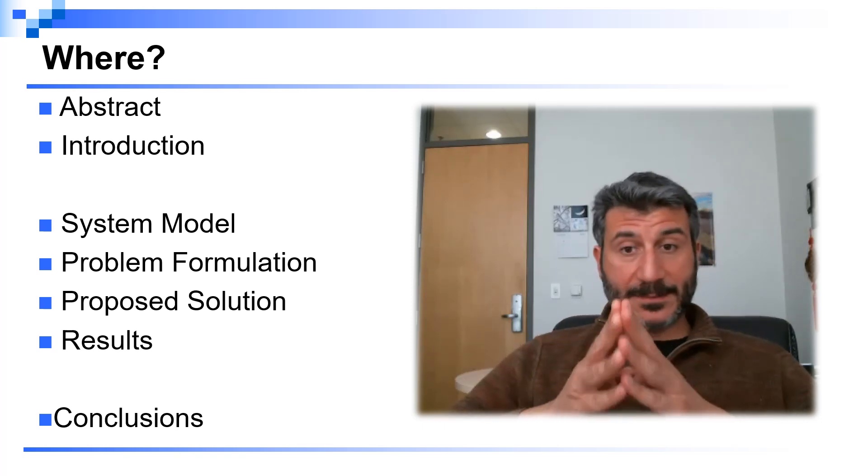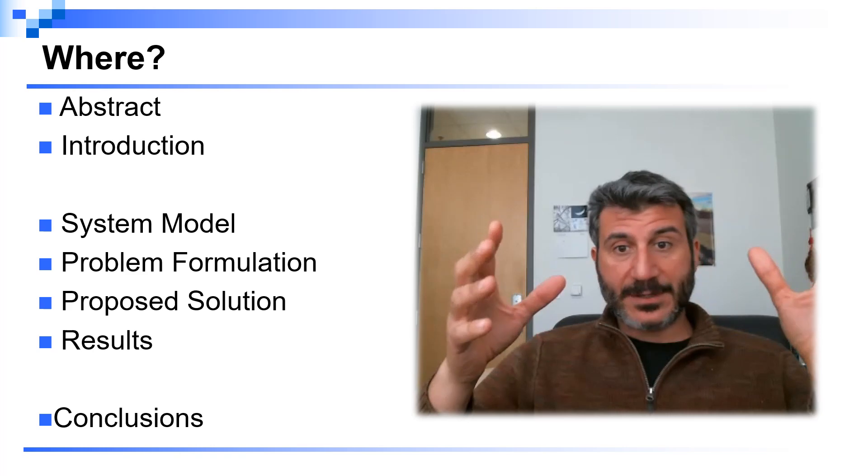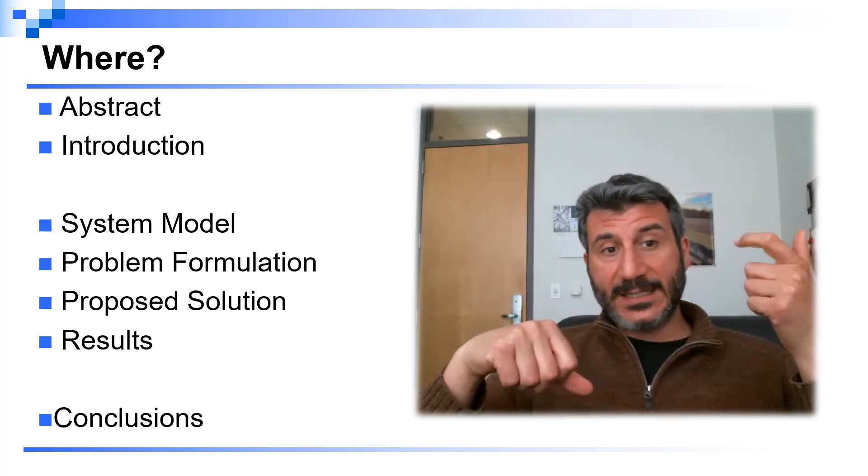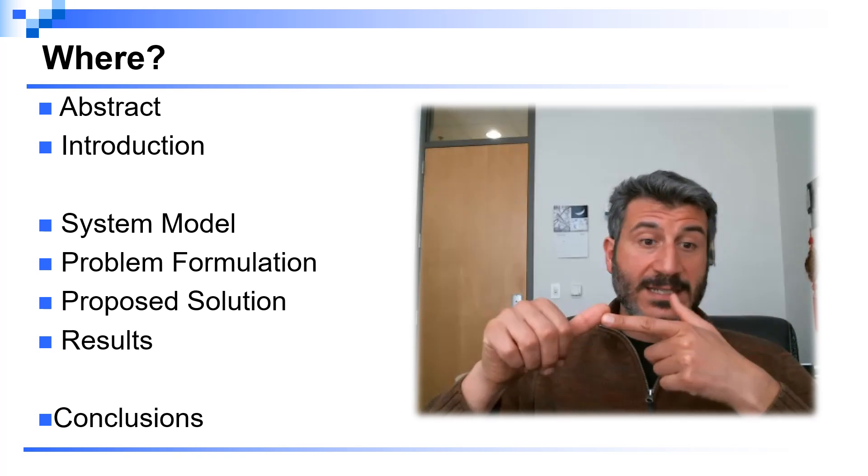The first question is where in a paper goes the related work section. If you look at the general structure of a paper, you will find first the abstract, then introduction, system model, problem formulation, proposed solution, results, and conclusions.